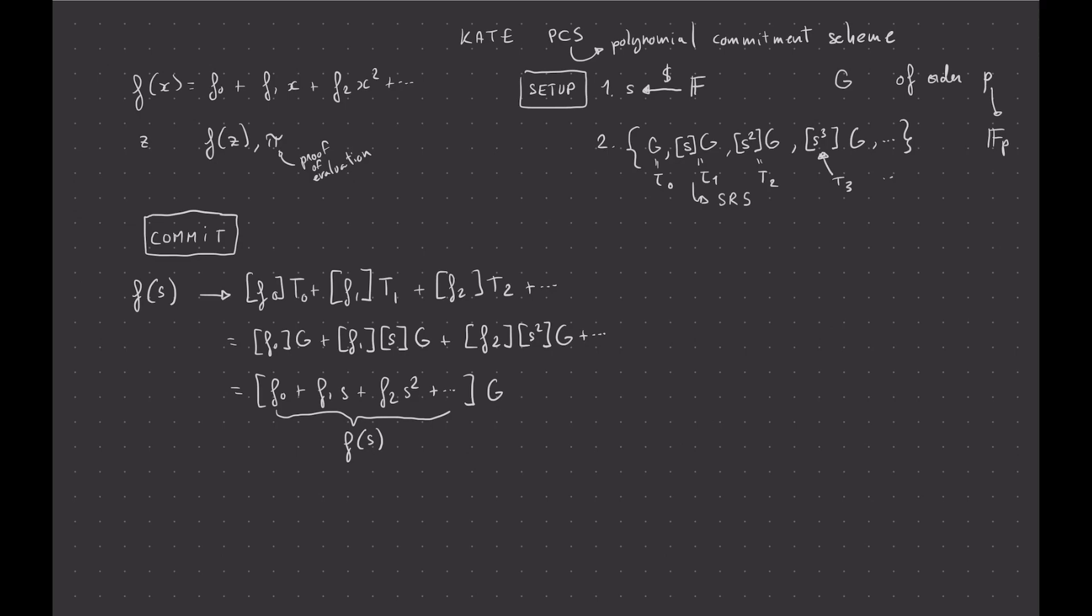And so pretty much what it means is that the evaluation of f(S) is hidden behind this group element. And so our commitment is pretty much this thing. And this thing here is a curve point. So you can see our commitment as just being a curve point in this Kate polynomial commitment scheme. Okay, I hope that made sense because that's the easier part of the scheme.